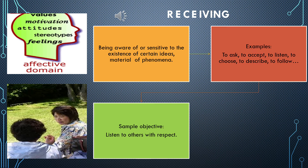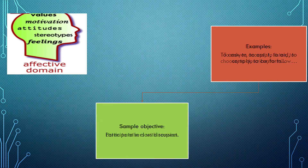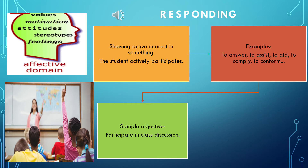An example objective of receiving is to listen to others with respect and to remember the name of newly introduced people. Next is responding — the student shows an active interest in something. It requires active participation on the part of the learner; the student attends and reacts to a particular phenomenon. Learning outcomes may emphasize compliance in responding, willingness to respond, or satisfaction in responding. The verb examples are: to answer, to assist, to aid, to comply, to conform, to discuss, and so on.